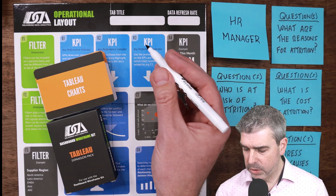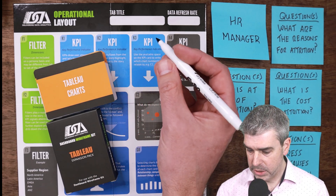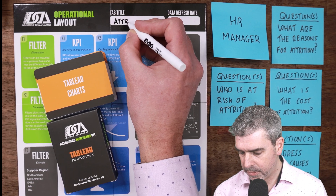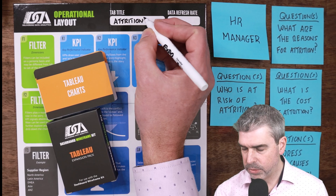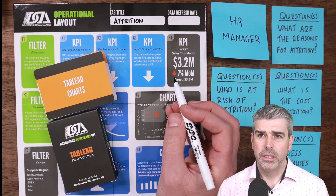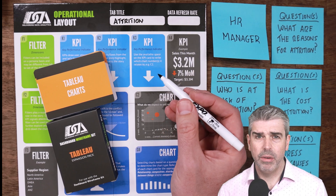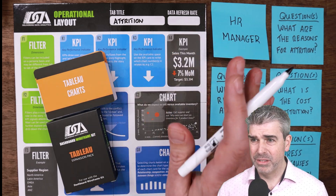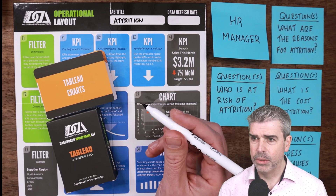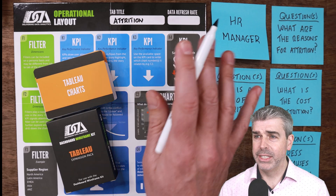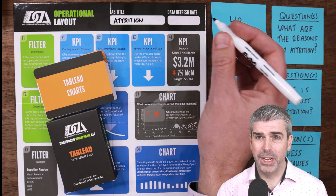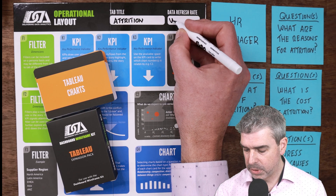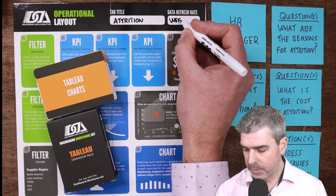We know this is an attrition tab, so let's just call it 'Attrition.' One of the first things we want to ask our stakeholders is the data refresh rate — how often are they going to be refreshing their Tableau dashboard? It's a multifaceted question. In this example, we're going to say weekly. Daily would be nice, but the data infrastructure and performance just isn't there, so we're going to put in weekly.